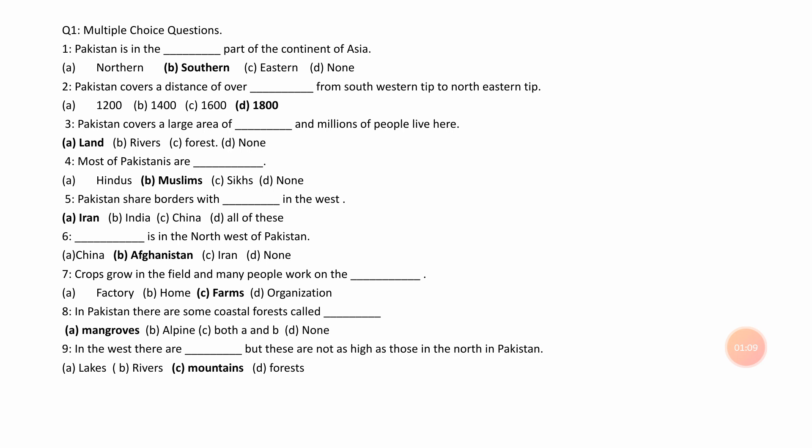Number 7. Crops grow in the field and many people work on the ___. A. Factory, B. Home, C. Farms, D. Organization. Answer is C. Farms.